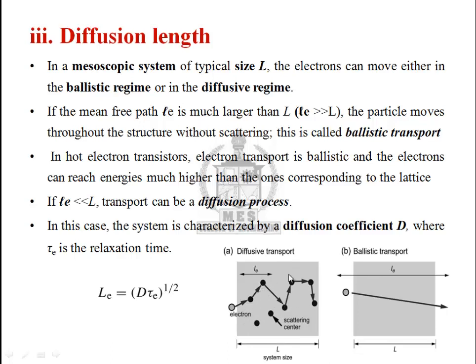In the diffusive transport regime, where L_e is less than L, such a system can be characterized by a diffusion coefficient D. The diffusion length L_e is equal to the square root of D times tau_e, where tau_e is the relaxation time and L_e is the diffusion length.